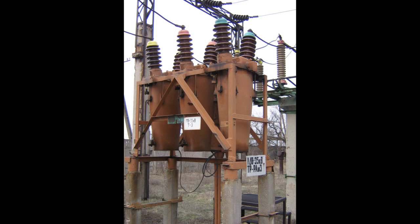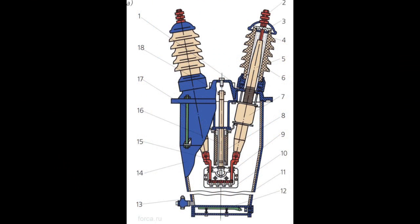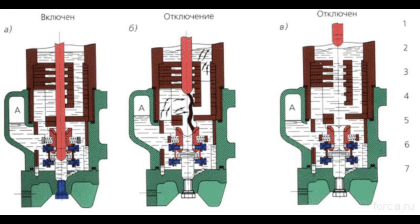When the switch is triggered, the contacts of the arc suppression chambers are broken first. At this point, electrical arc appears. Under the influence of the high temperature of the arc, the oil quickly evaporates.